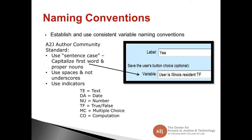The first tip is on naming conventions. This is standard across the A2J author community and the HotDocs community, but it's always a good idea to use the community standard, which is sentence case — capitalizing the first word and proper nouns. We use spaces and not underscores, and we use indicators: TE is text, DA is date, NU is number, TF is true-false, MC is multiple choice, and CO is computation. This keeps it consistent throughout your HotDocs and your A2J, and it reminds you what kind of variable it is when looking at a variable list.